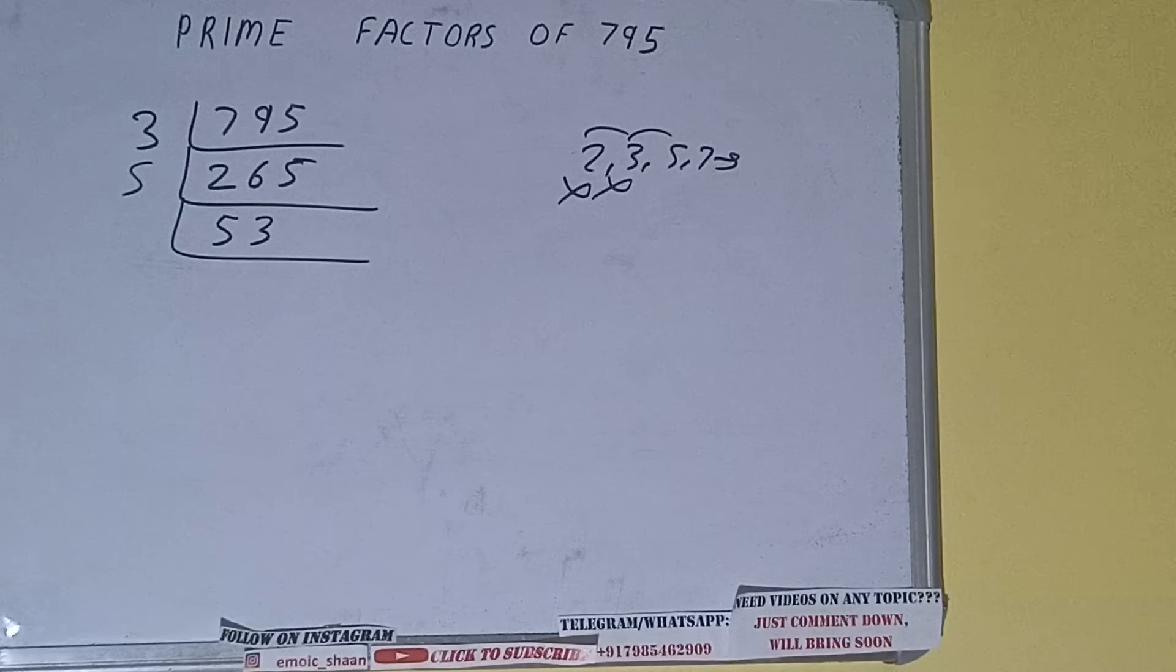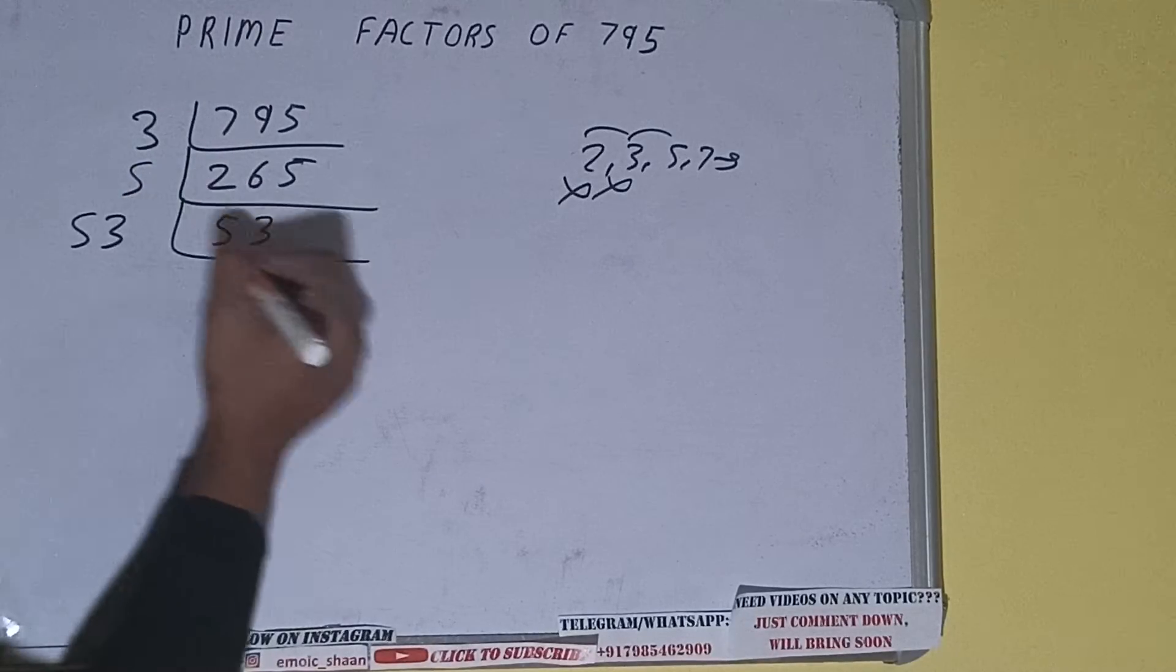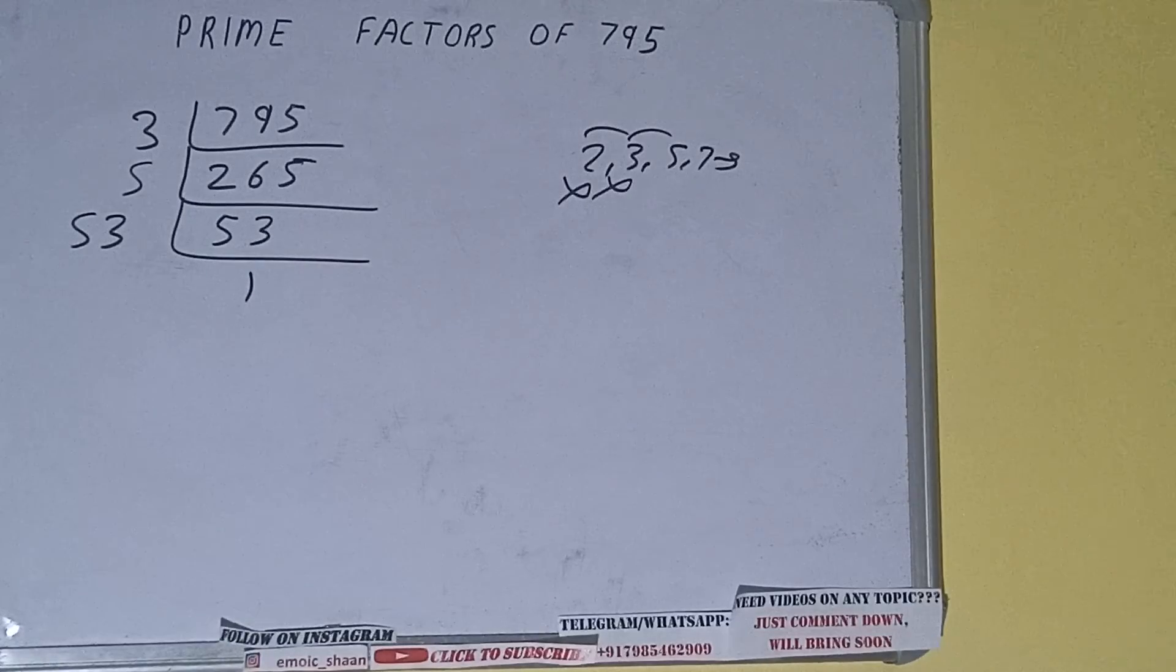Is 53 again divisible by 5? The answer is no. And note that 53 is also a prime number, so it is only divisible by itself, that is 53. Once we divide 53 by 53, we'll be getting 1. Once we get 1, we need to stop.